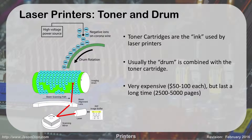The toner cartridges are what we refer to as the ink for laser printers, but it's actually not ink — it's dry powder. Usually the drum is combined with the toner cartridge in one replaceable unit. These can be expensive to replace, generally about $50 to $100 each, but they last a long time — 2,500 to 5,000 pages or more. Compare that to an inkjet, where you're paying $25 to $50 for a cartridge that may last 1,000 pages. So laser printers are actually very efficient from a business standpoint.